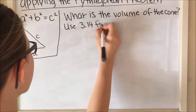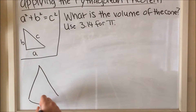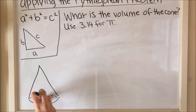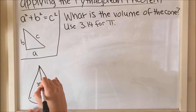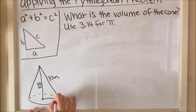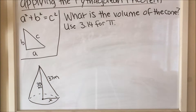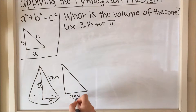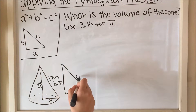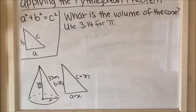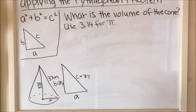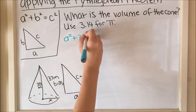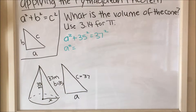We have to find the volume of the cone, and to do that we first need to find the radius using the Pythagorean theorem. We have to use 3.14 for π. The height of this cone is 35 meters and the hypotenuse is 37 meters. I'm drawing out a cross section of the cone to show the dimensions. So: a² + 35² = 37². Solving that, the radius is 12.